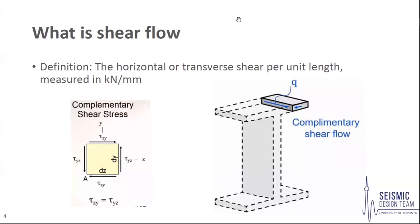So what is shear flow? Before we dive in on how to analyse shear flow, we must first understand what it is and how it is developed. Shear flow is defined as the horizontal or transverse shear per unit length, generally measured in kilonewtons per millimetre. Shear is developed in complementary pairs, meaning shear forces that develop in different directions on an element are equal in magnitude. This is necessary to satisfy moment equilibrium.